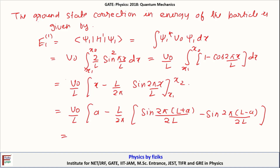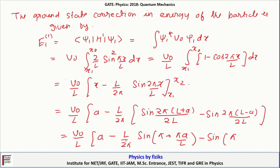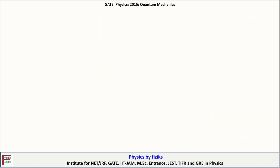This term can be further simplified using the sine subtraction identity to give (L/2π) × 2 sin(π) cos(πA/L). The value of this term works out to V₀ × [1/100 + 1/(2π)], which evaluates to 0.0314 plus 0.0314.